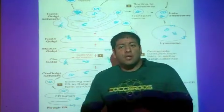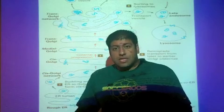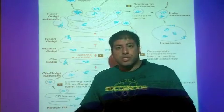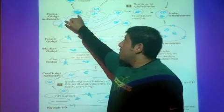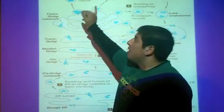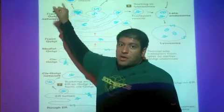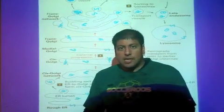When the pancreas, for example, receives the signal that there's a high level of blood glucose in the blood, then these secretory granules will receive that signal and fuse with the plasma membrane, thus releasing insulin into the blood.